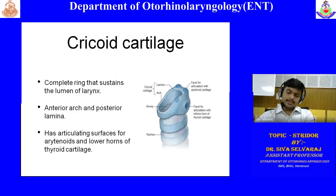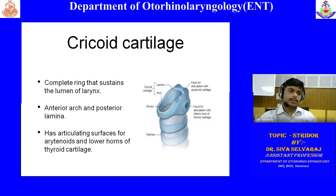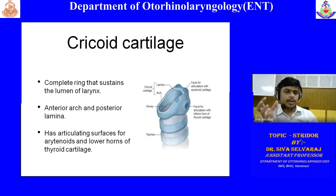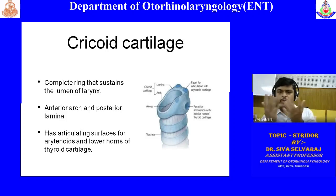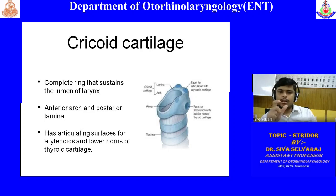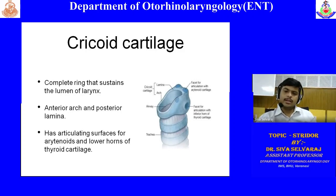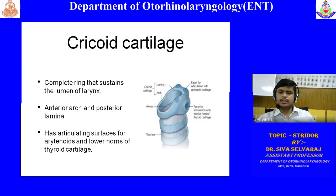The cricoid cartilage is significant because it is the only complete ring cartilage in the larynx. The epiglottis is flat, the thyroid cartilage is shield-shaped, but only the cricoid forms a complete ring. This ring maintains the lumen of the larynx, preventing it from collapsing. The anterior part of the cricoid is thin and is called the arch, while the posterior aspect is tall and flat — called the lamina.